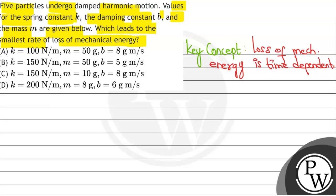Now, the rate of loss of mechanical energy expression is like this: it equals b times the square root of k over m times e raised to the power minus bt over m times cosine squared omega t plus theta.